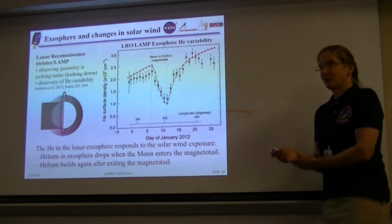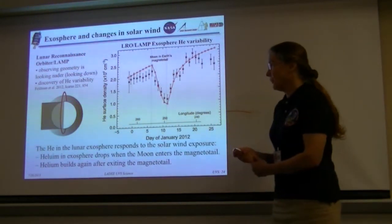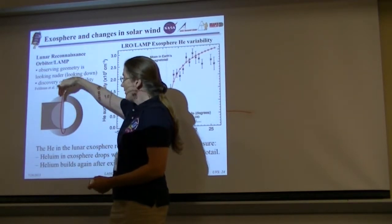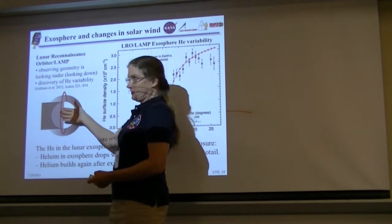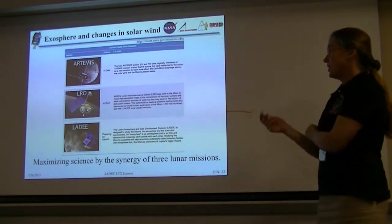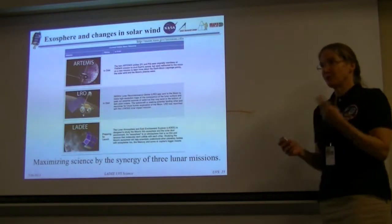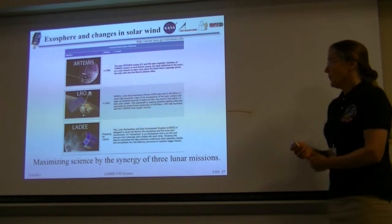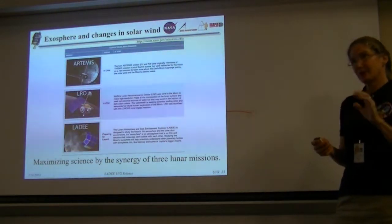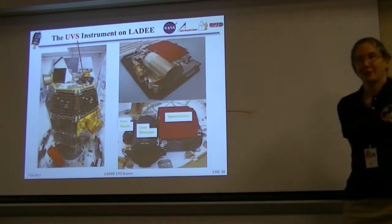The Lunar Reconnaissance Orbiter with its LAMP instrument has observed a change in the helium surface density of the lunar exosphere. The exosphere builds and then when the Moon goes into the magnetotail, the amount of helium drops down and it recovers in about eight days. We're seeing a response of the exosphere to its being protected from the solar wind heating of atoms. The wonderful opportunity here is that we have Artemis, which are two probes in orbit around the Moon characterizing the plasma environment. We have LRO with its thermal mapping and LAMP instrument that is at shorter wavelengths and is a great complement to the LADEE UVS data.